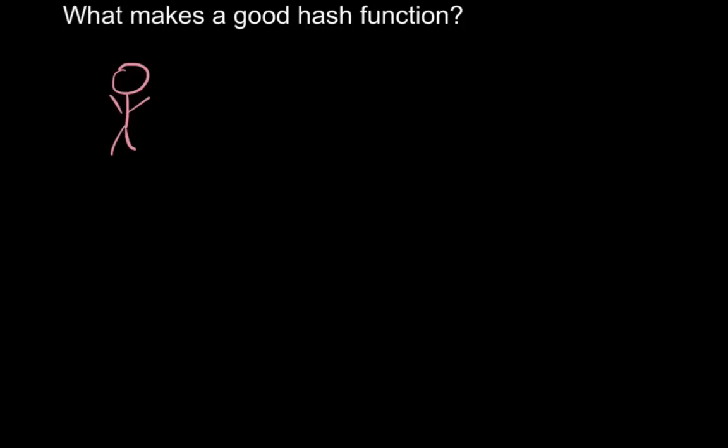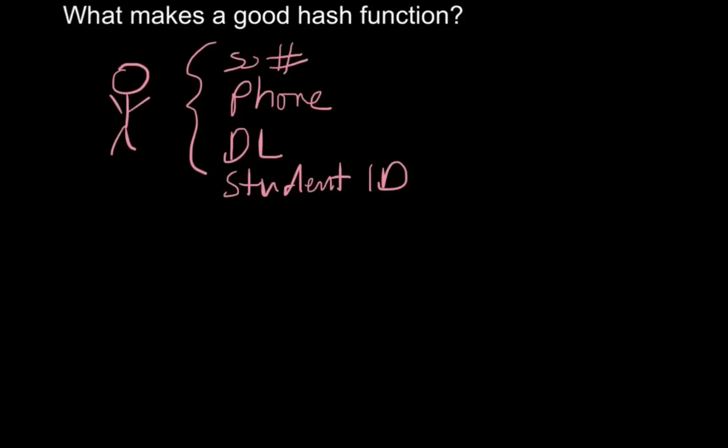You have a number of different options in terms of having some fast way of looking them up. So if you have a student, there are a few different ways that you may be able to categorize a student. You could say he may have a social security number, he may have a phone number, he may have a driver's license, and he will have a student ID.